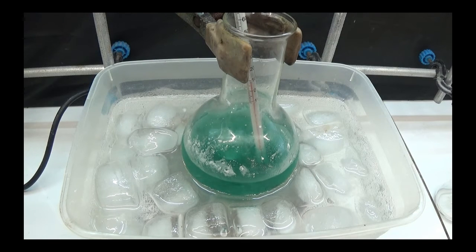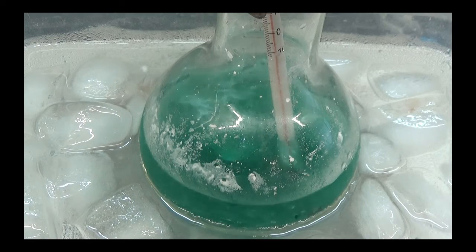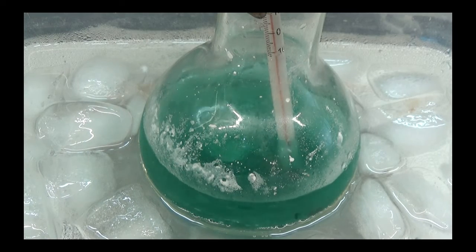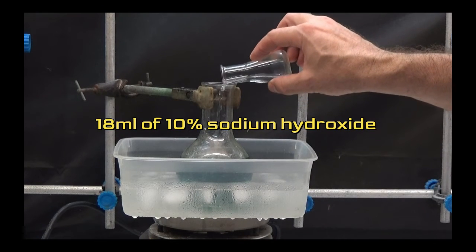Once half of the hypochlorite solution is added, the reaction changes to blue and almost all of the salicylamide dissolves. When all the hypochlorite solution has been added, cool with an ice bath.